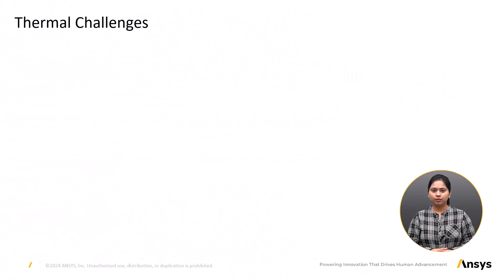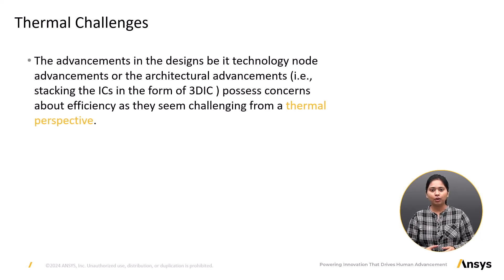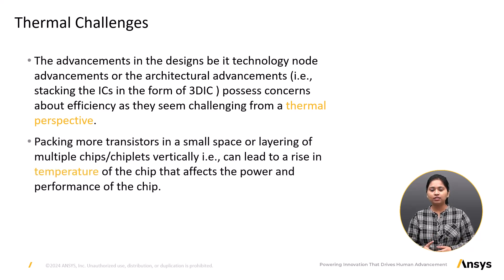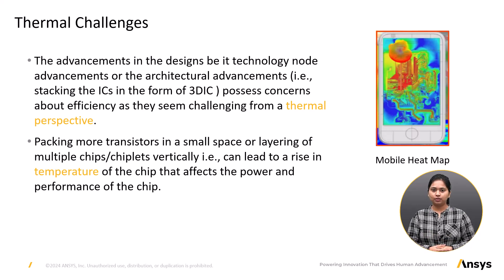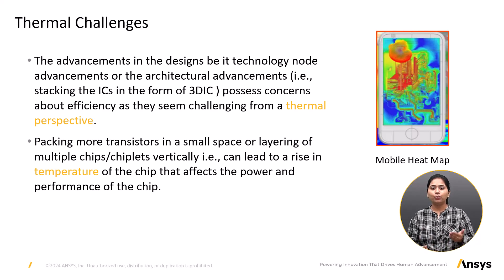Thermal challenges are emerging as chips become smaller and move toward 3D architecture. Technology node shrinking makes it more difficult for heat to dissipate and increases temperature, which can cause mechanical stress. This can get worse in complex 3D IC structures, where the varied materials used for different heterogeneous integration will have different coefficients of thermal expansion, further causing thermal and mechanical stress challenges.